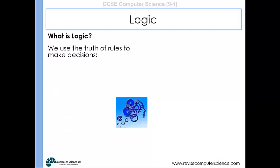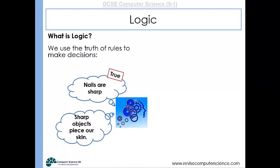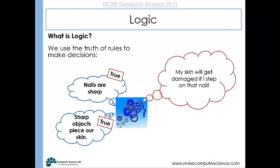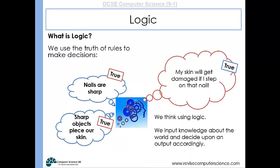So we use the truth of rules to make decisions. Nails are sharp — that's true in this situation. Sharp objects pierce our skin — well, that's true. So therefore we know that our skin would get damaged if we stepped on that nail. So we think using logic. We input knowledge about the world and decide upon an output accordingly.